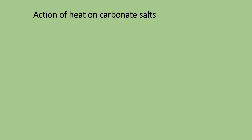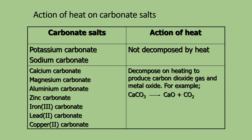Action of Heat on Carbonate Salts — refer to your handout, page 10. The first two carbonate salts are potassium carbonate and sodium carbonate. These two are not decomposed by heat; they have a very strong bond between K⁺ and CO₃²⁻. The rest — calcium carbonate, magnesium carbonate, aluminum carbonate, zinc carbonate, iron(II), iron(III), lead(II), and copper(II) carbonate — decompose on heating to produce carbon dioxide and metal oxide.